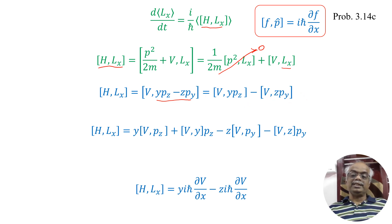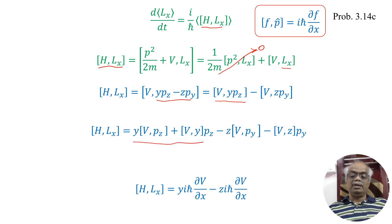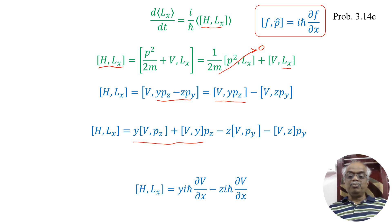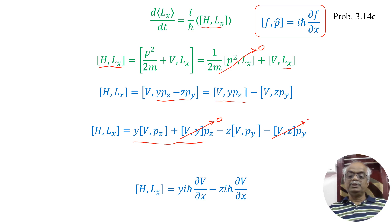Using the commutator expansion, we take Y to the left and Pz to the right, and similarly Z to the left and Py to the right, giving four terms. The commutator of the potential V with position components Y and Z will commute — potential with position commutes — so those terms become zero. Only the terms involving commutators of V with the momentum operators Pz and Py remain.